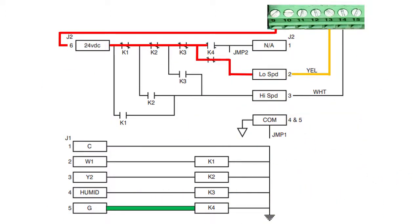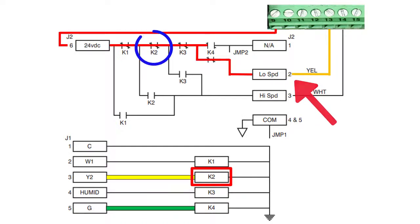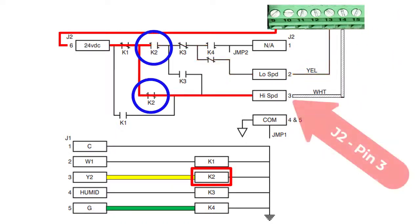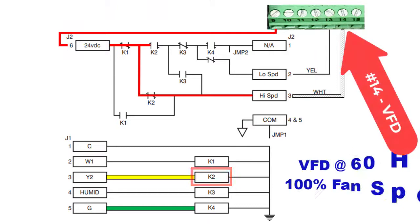During second stage cooling, the Y2 signal is routed to the fan control board J1, closing the K2 relay. With the K2 relay closed, the 24V DC output at J2 pin 2 is de-energized. The output at J2 is simultaneously energized and returned to the VFD at terminal 14, commanding the VFD to 60Hz, or 100 percent of fan speed.